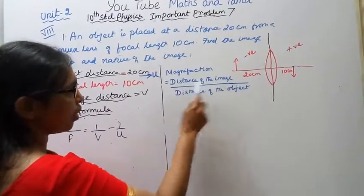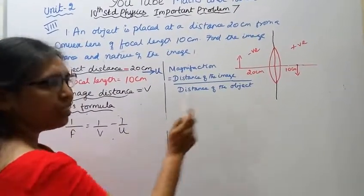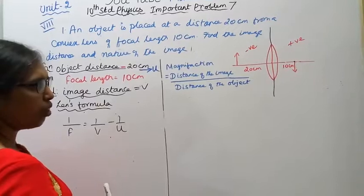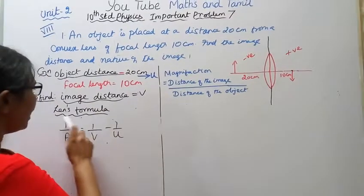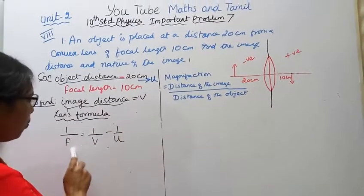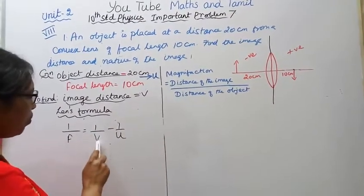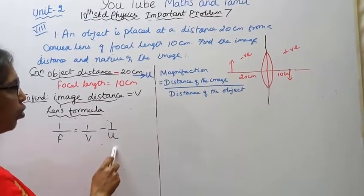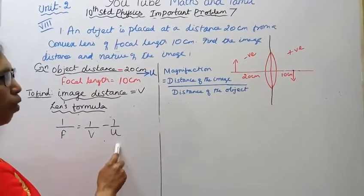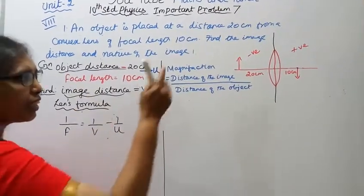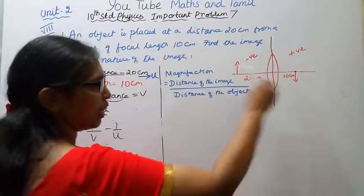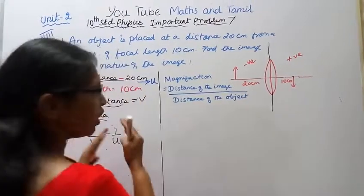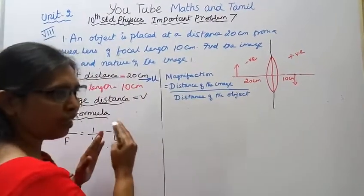We will calculate the magnification formula: distance of the image divided by distance of the object. Then the lens formula: 1/f = 1/v − 1/u. We will calculate whether values are positive or negative using the sign convention.